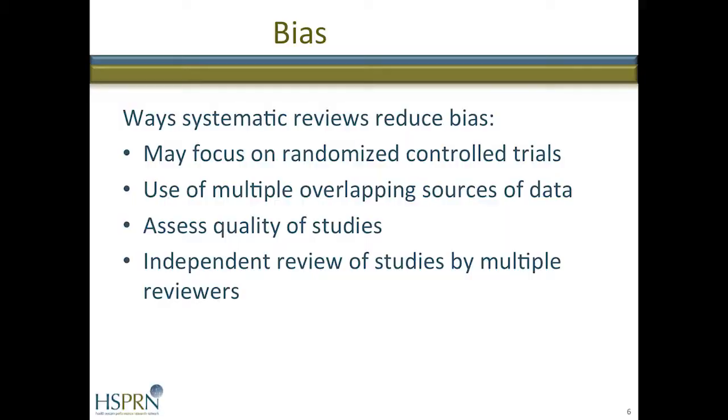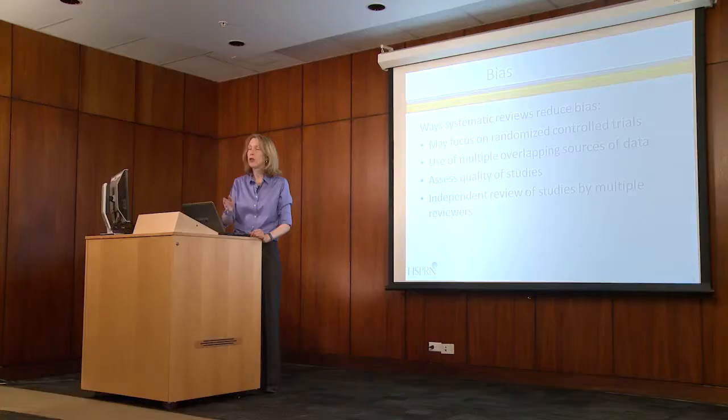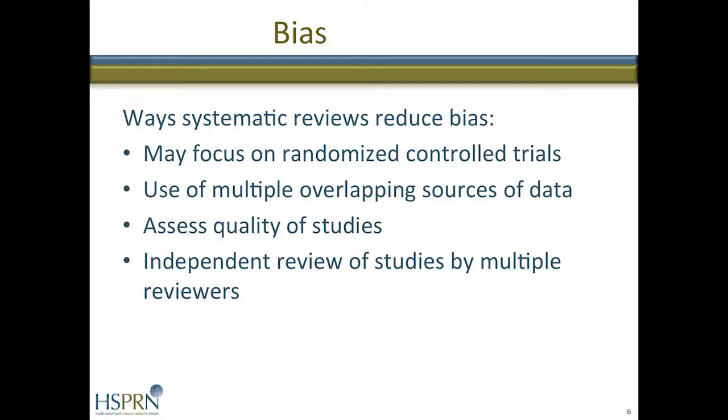It's very important to reduce bias, and systematic reviews can do this well. If there's bias, you can end up with results that are misleading or plain wrong. Bias is reduced by assessing the quality of the studies, by using multiple reviewers, and by using randomized control trials and focusing only on that kind of study. However, only about 10% of healthcare studies actually use randomized control trials, so this might not always be a realistic approach.